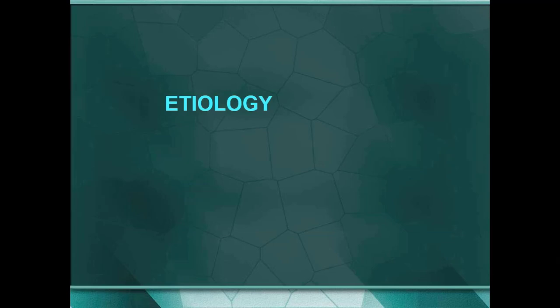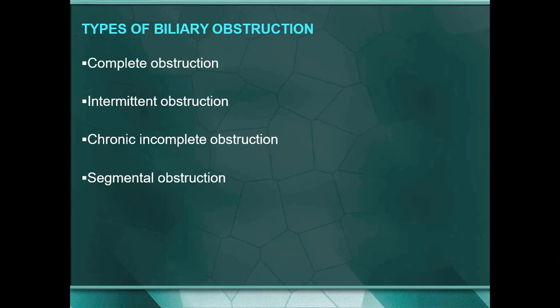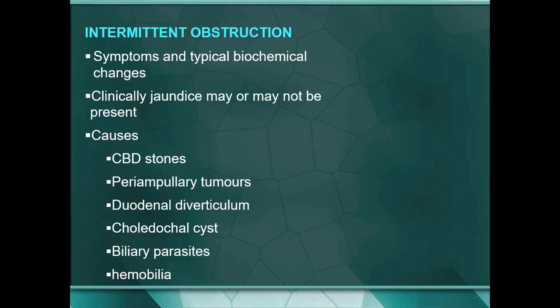What is the etiology of obstructive jaundice? There are different types of biliary obstruction: complete, intermittent, chronic intermittent, incomplete, or segmental obstruction. In intermittent obstruction, symptoms and typical biochemical changes — and clinically jaundice — may or may not be present. The most common cause, which must be on top priority, is CBD stones, then peri-ampullary tumors, duodenal diverticulum, choledochal cysts, biliary parasites, and hemobilia.